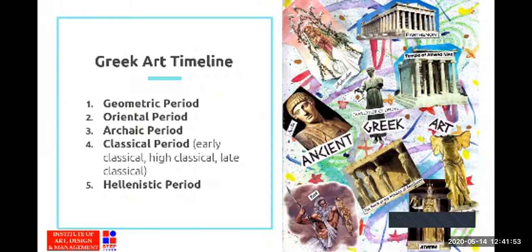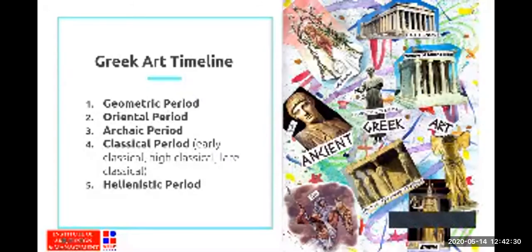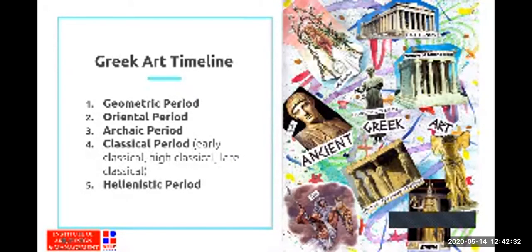Then comes the Classical period, further categorized into Early Classical, High Classical, and Late Classical. The Classical period featured very intricate detailing in paintings and sculptures. The Hellenistic period was the true form of Greek art — with such realism that clothing folds and individual hair strands can be seen clearly in Hellenistic period art.